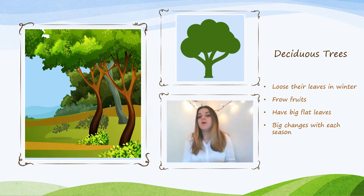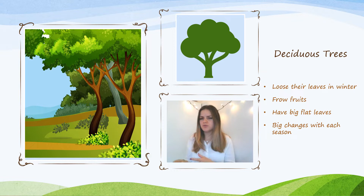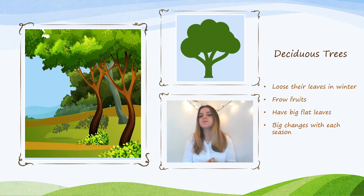Deciduous trees obviously lose their leaves in winter. They have a different structure — their leaves are a lot bigger and a lot flatter. They tend to grow fruit instead of cones. Remember our conifers have that name because it comes from the same place as 'cone', but deciduous trees usually grow fruit and there are big changes throughout the seasons. We're going to look at what some of these trees are and how we can identify different kinds of deciduous trees.